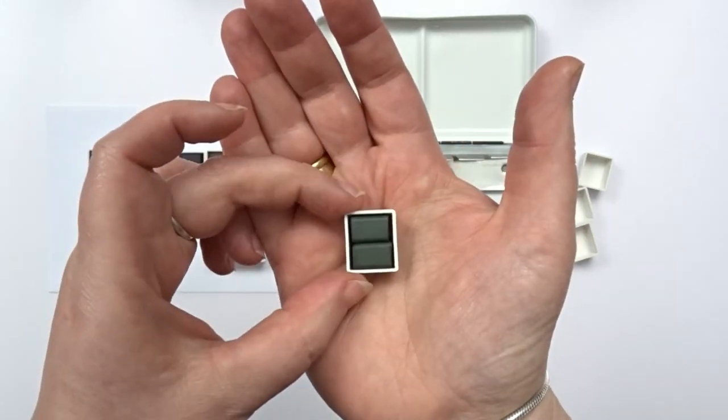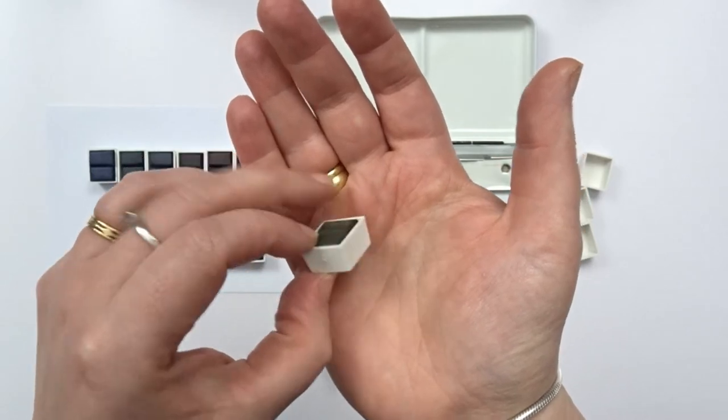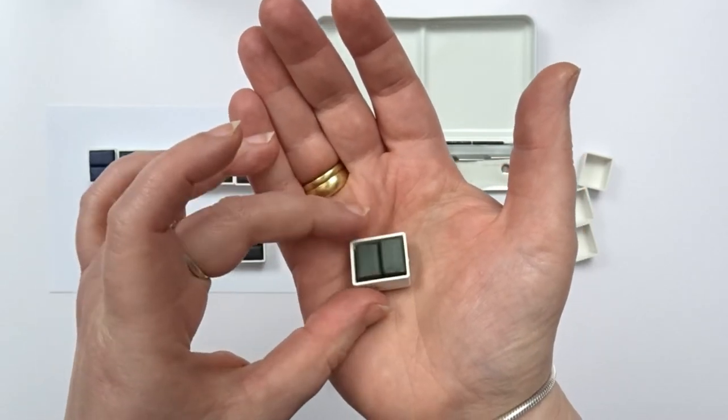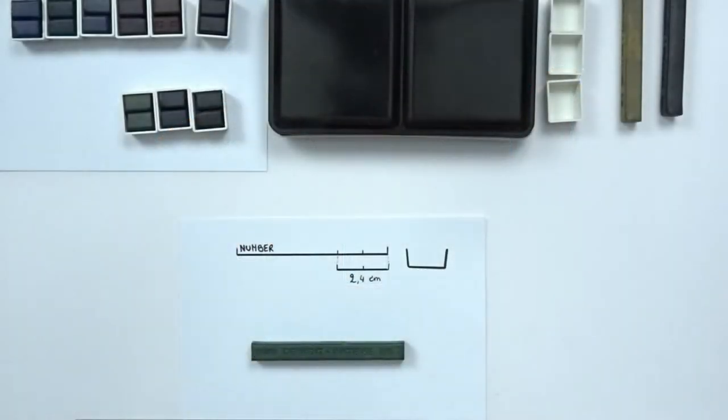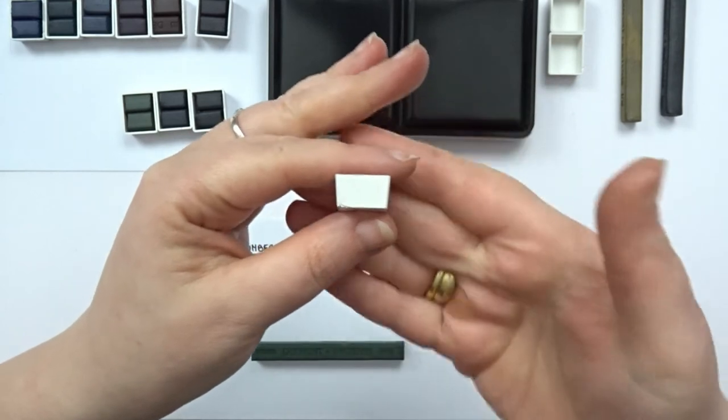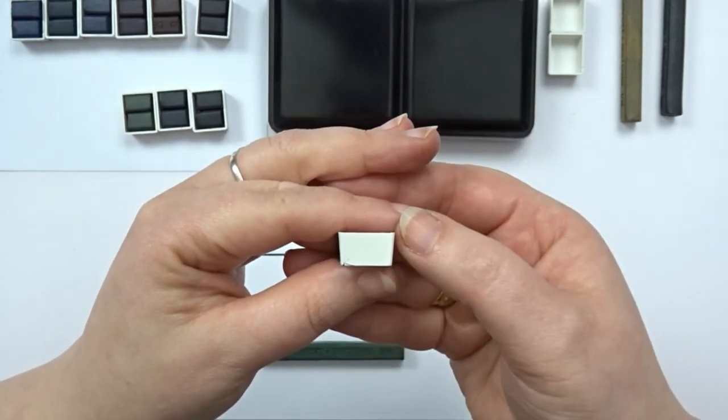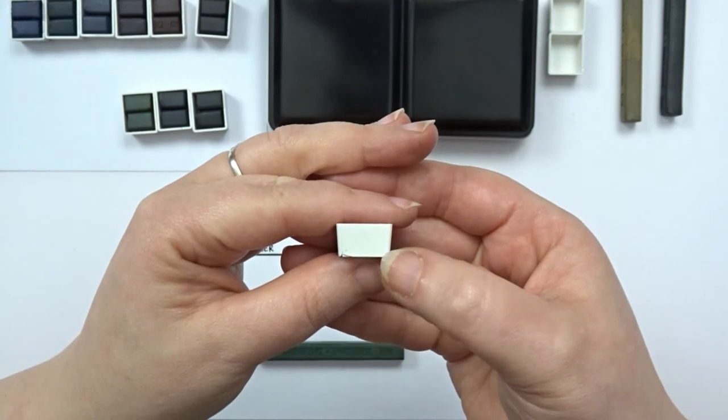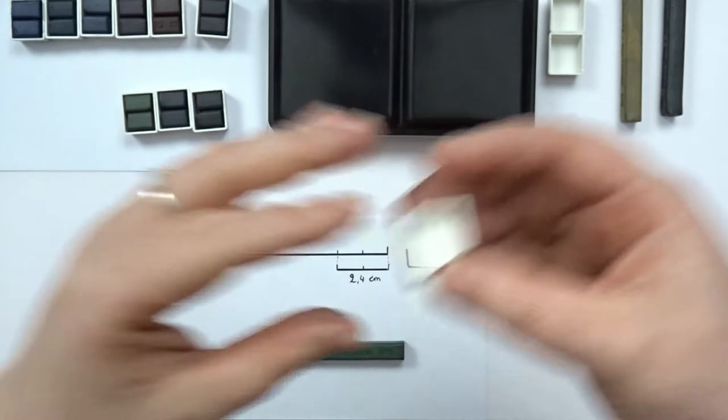Now what I did was just filling up my pans with the Inktense blocks. So to cut up your Inktense blocks to fit in the pans you want to measure the bottom part of your pan.